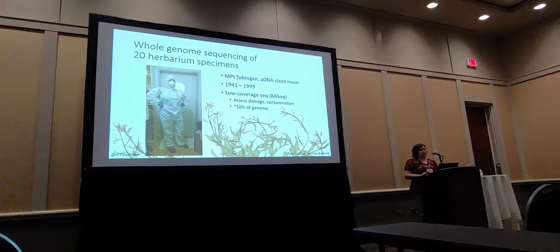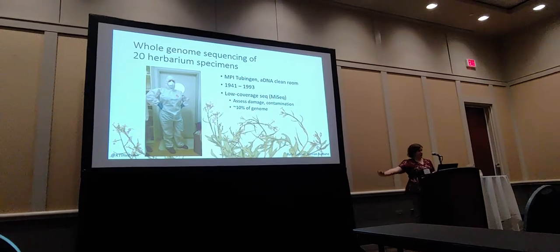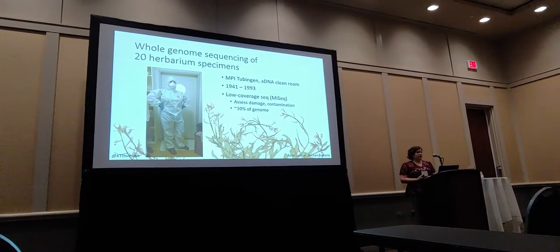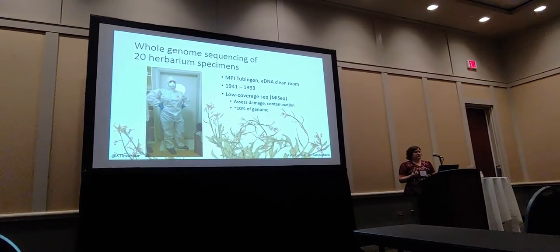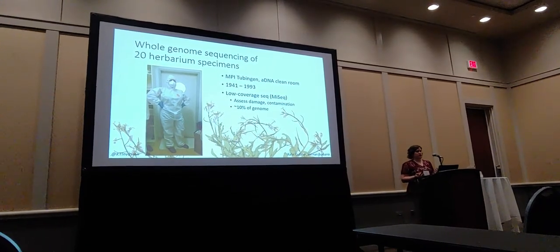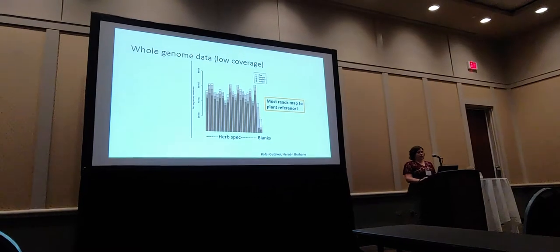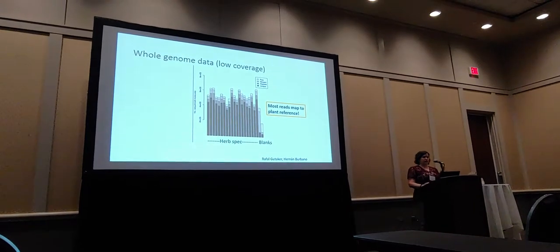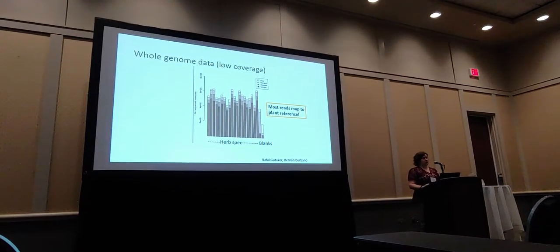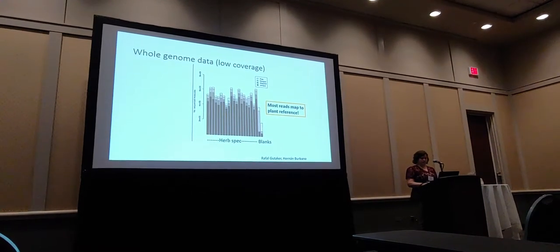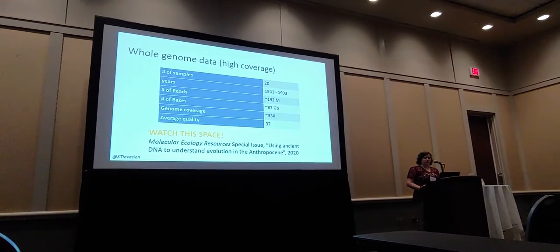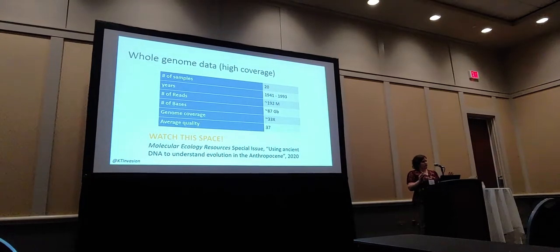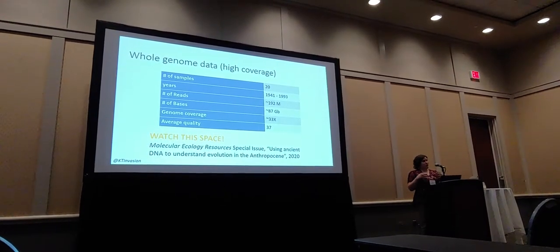With the help of collaborators at the Max Planck Institute in Tübingen, I got to pull on an extremely fashionable outfit, and we produced sequencing libraries from 20 herbarium specimens ranging in time from 1941 to 1993. We sequenced these to low coverage — about 10% of the genome — to look for patterns of ancient DNA damage. The dark brown color indicates the majority of reads mapped back to my modern Chorispora assembly, so contamination is low. Since the low-coverage libraries all look pretty good, I got much higher coverage sequencing done, and right now, as we speak, the PSU servers are running analysis on this data. Watch this space.